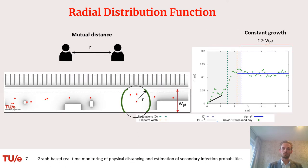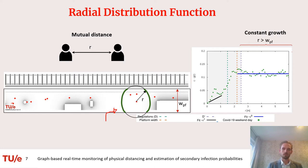However, when the mutual distance R becomes larger than the platform width, we see that the location on the circumference of the circle where we can find a pedestrian — this green bit — is only remaining constant. So also the probability to find a pedestrian at this location should remain constant.